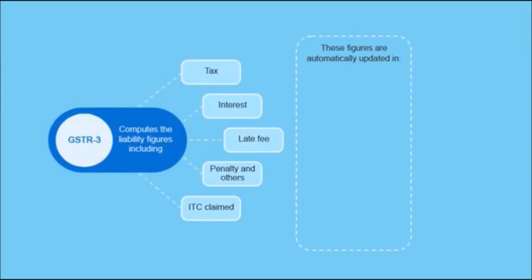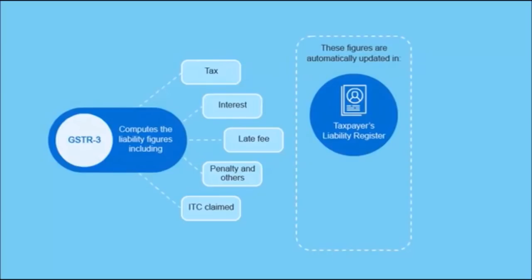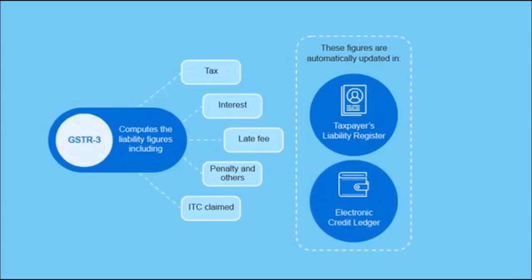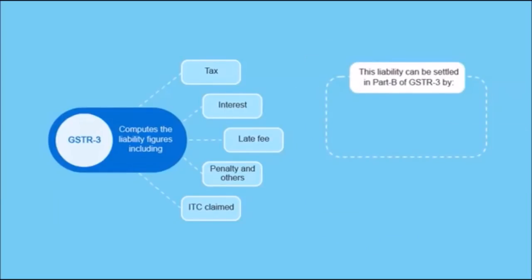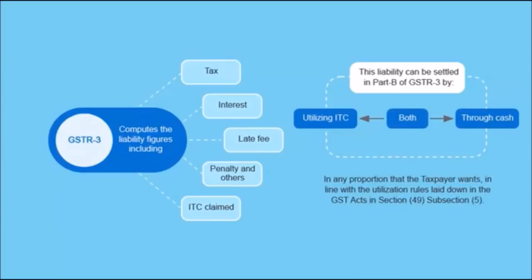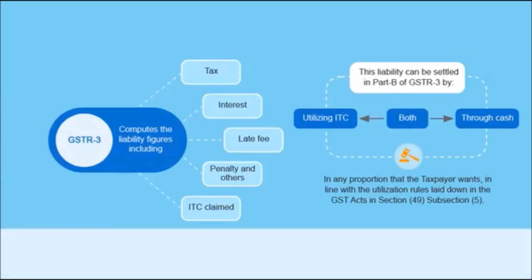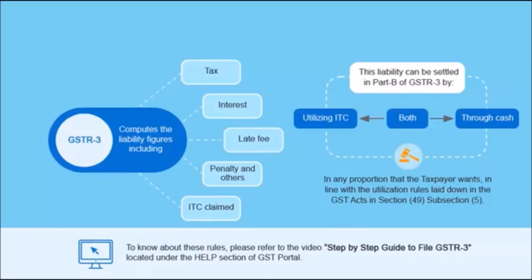These figures are then automatically updated in the taxpayer's liability register as well as the electronic credit ledger in the GST portal on the basis of confirmation by the taxpayer in Table 10, Interest Liability. This liability can then be settled in Part B of GSTR 3 either by utilizing ITC or through cash or both in any proportion, in line with the utilization rules laid down in the GST Acts in Section 49, Subsection 5. To know about these rules, please refer to the video Step-by-Step Guide to File GSTR 3 located under the Help section of the GST portal.